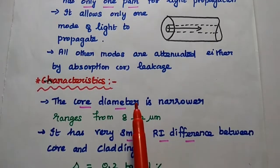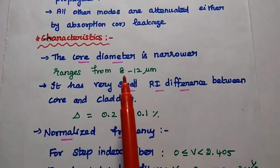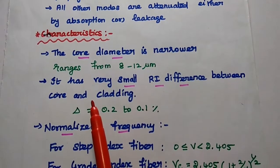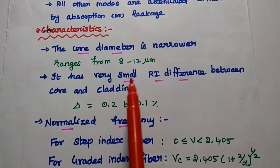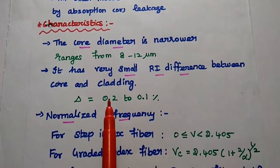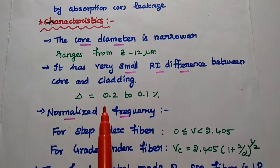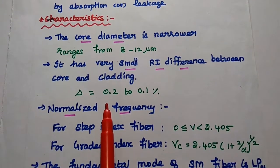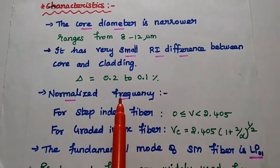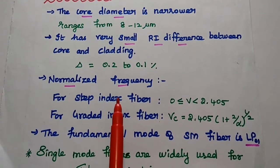The characteristics of single mode fiber are as follows. The core diameter is a narrower one, ranging from 8 to 12 micrometers. The refractive index difference between core and cladding is very small, ranging from 0.1 to 0.2 percent. Single mode fiber is further classified into two types based on the refractive index.